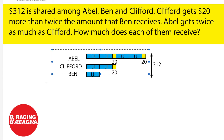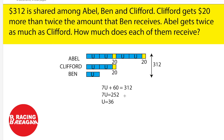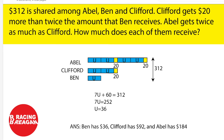Now in order to find 7 units, you take 312 minus 60, which equals 252. Since you know that 7 units is 252, you know that 1 unit will equal 36.